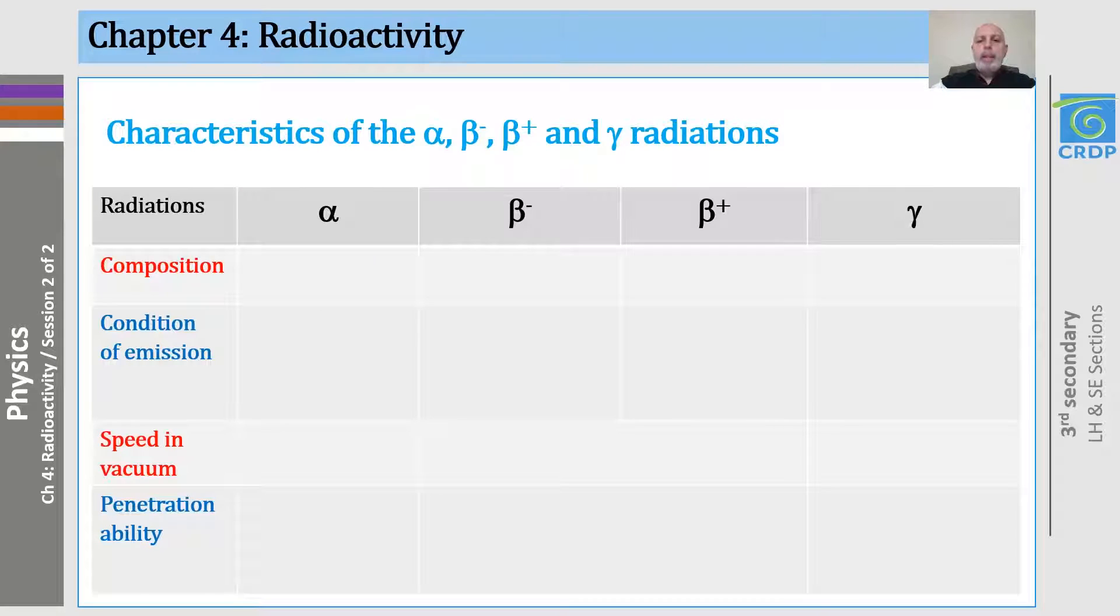Now before we continue, let me start by reminding you what we did last time. Last time we learned that there are four types of radiations: alpha, beta minus, beta plus, and gamma. We learned that the alpha radiation is formed of helium nuclei, beta minus of electrons, beta plus of positrons, and gamma formed of photons like light.